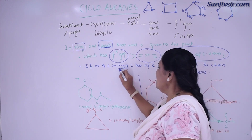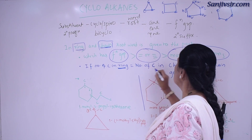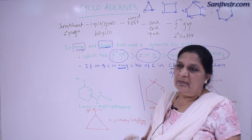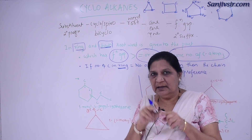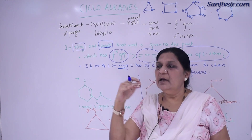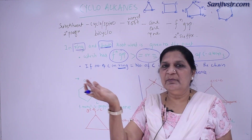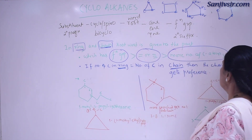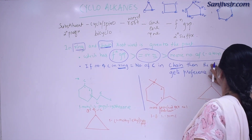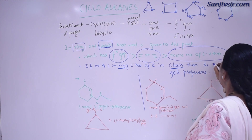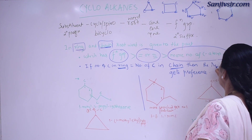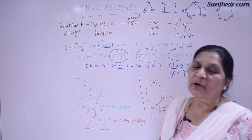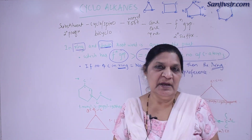Now understand: if the number of carbon atoms in the ring structure is the same as the number of carbon atoms in the chain structure — for example, propane here and cyclic structure also has propane, and the side chain also has the same number of carbon atoms — in that case, the ring gets the preference. You should give it 'cyclo'; the name should be cyclo.